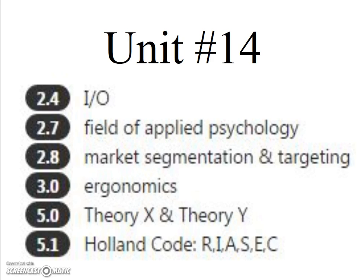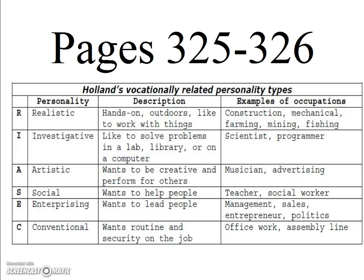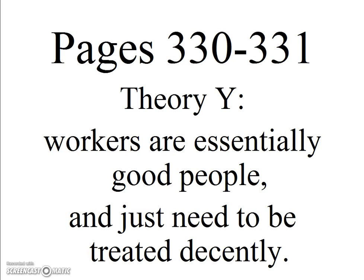Unit 14 talks about applied psychology. Students want to know more about Holland's Code, summarized on page 325. Theory Y and Theory X are different theories of how management should take place. Theory Y says that workers are essentially good people who just need to be treated decently — this was the theory of humanistic theorists such as Abraham Maslow. Good luck on this.